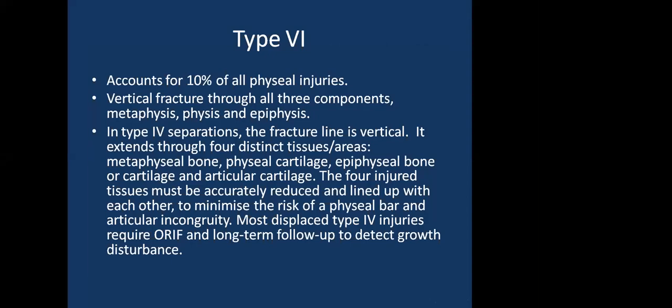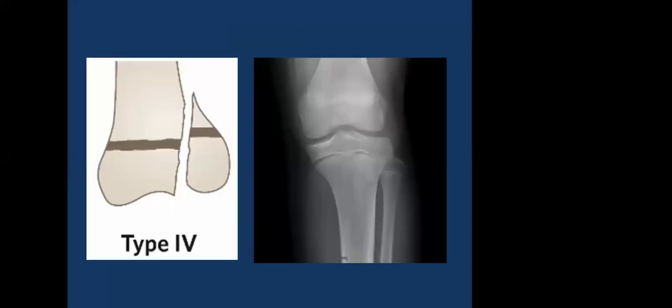Type 4 accounts for 10% of all physeal injuries. It is a vertical fracture through all three components — the metaphysis, the physis, and the epiphysis — extending through four distinct tissues: metaphyseal bone, physeal cartilage, epiphyseal bone or cartilage, and articular cartilage. All four injured tissues must be accurately reduced and aligned to minimize the risk of a physeal bar and articular incongruity. Most displaced type 4 injuries require open reduction, internal fixation, and long-term follow-up to detect growth disturbance.